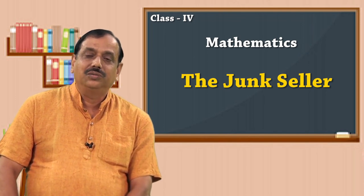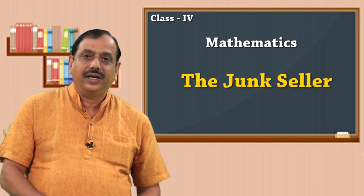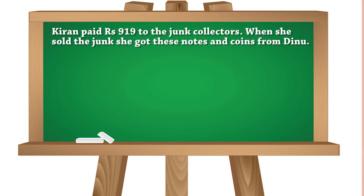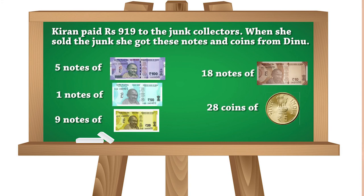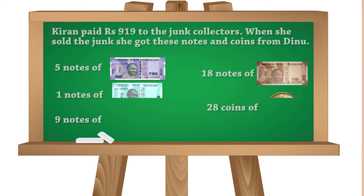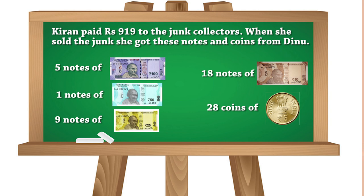Now here is an activity for you: Kiran has paid 919 rupees to junk collectors and has sold all the junks at Dinu's shop, and these are the denominations she received. Make an entry in Kiran's diary stating the amount she spent and the money she earned. Is she making a profit in this situation or a loss? Compute the details given in the picture and discuss your answers with your parents.